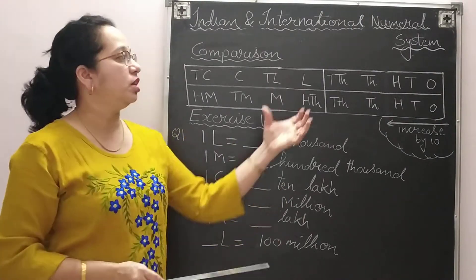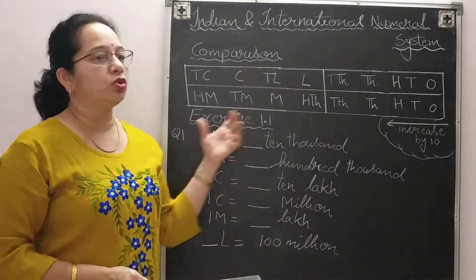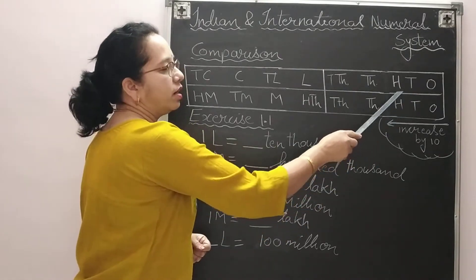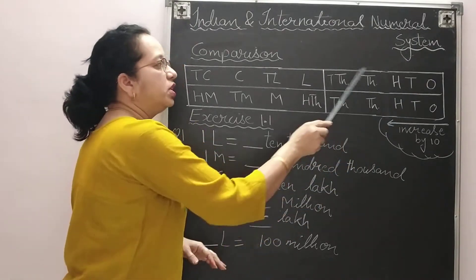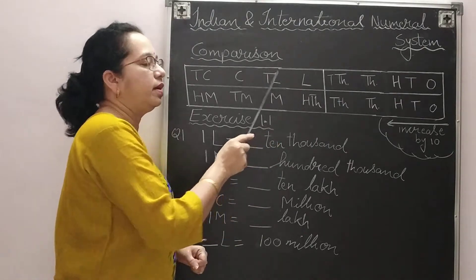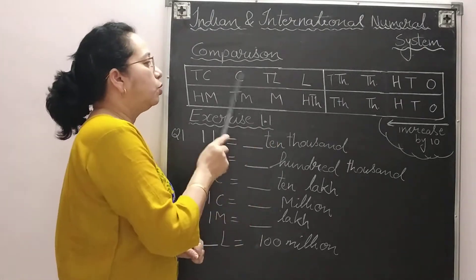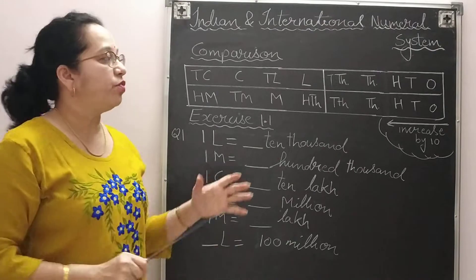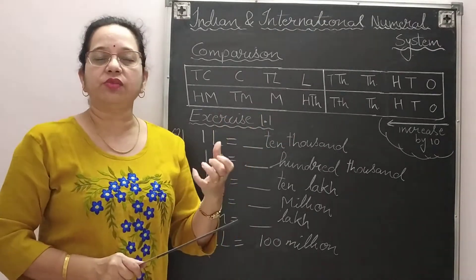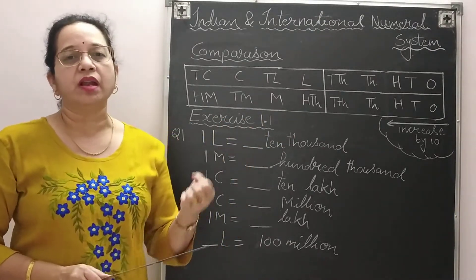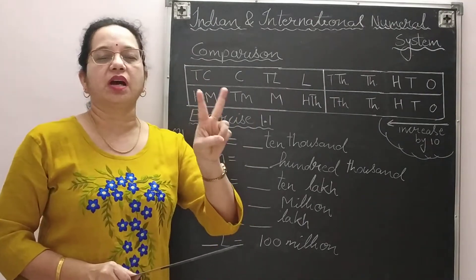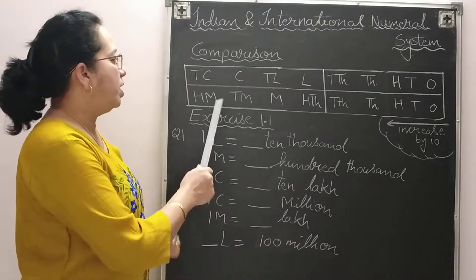Reading the Indian system thoroughly once again: ones, tens, hundreds, thousands, ten thousands, lakh, ten lakh, crore, ten crore. So it's easy to remember: first comma after three digits, then all other commas after two digits each.